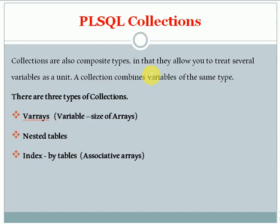Variables can store one value, but if you have a requirement to store multiple values and you want to use that data for validations, data conditions, checking, or data updates, you can store values into collections and process that data. There are three types of collections: Varray (variable array), nested table, and indexed by table, which is also called an associative array.